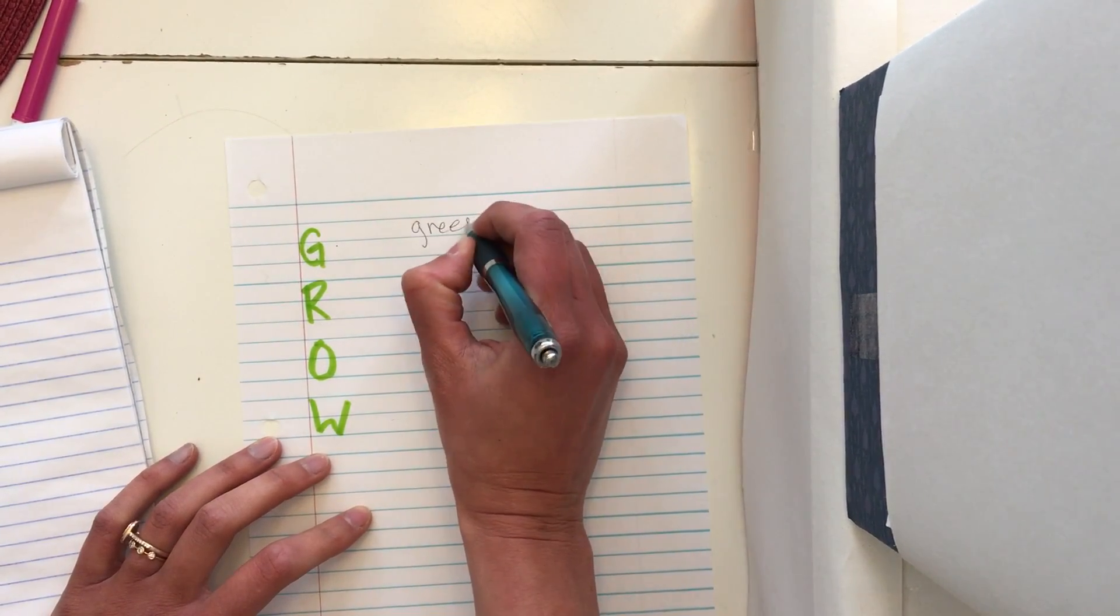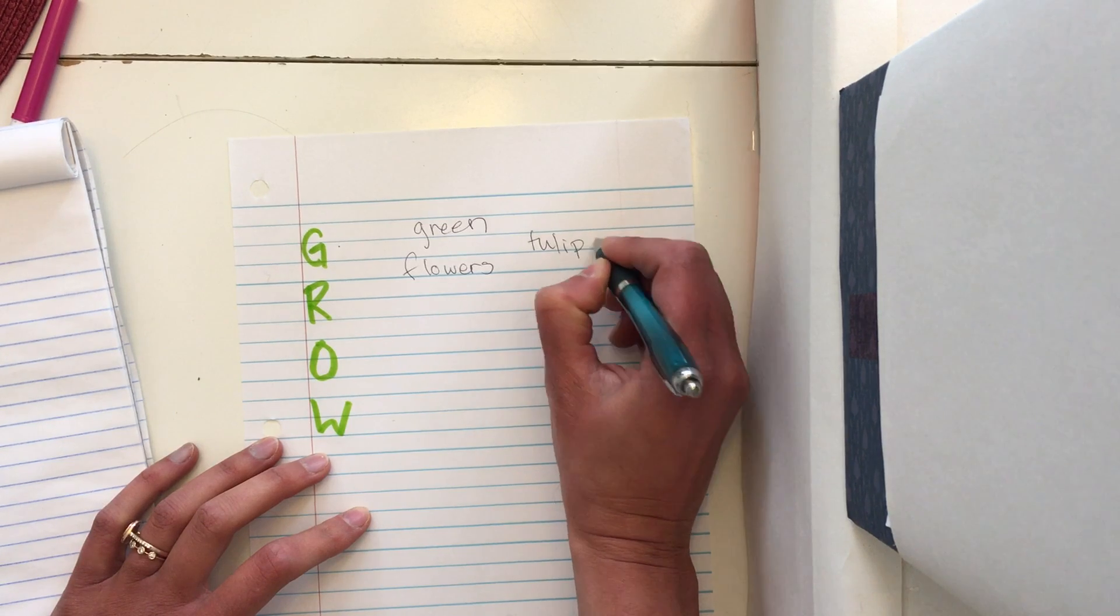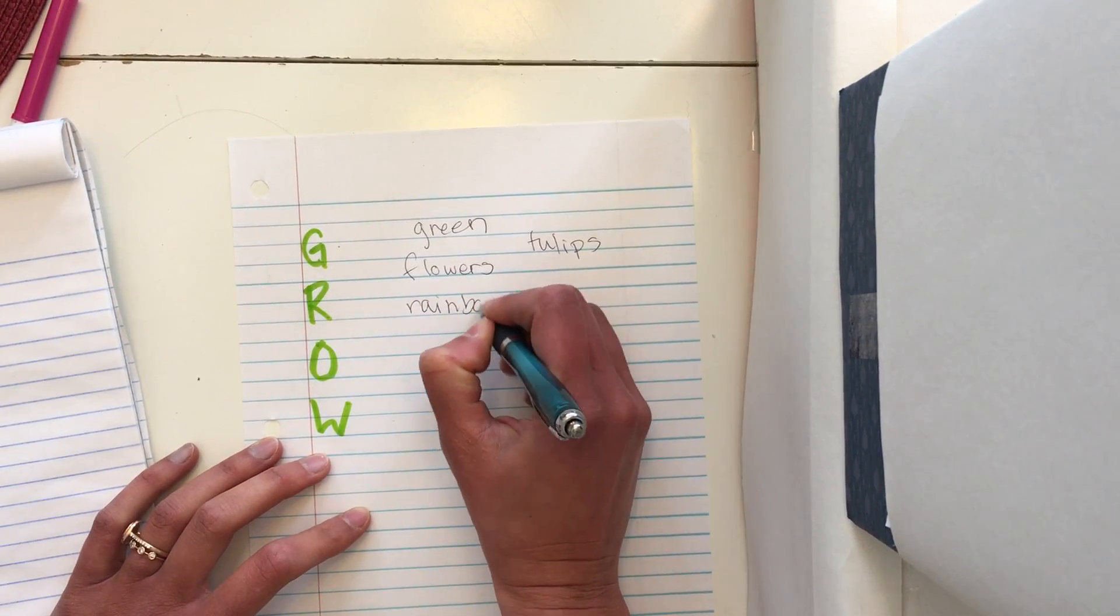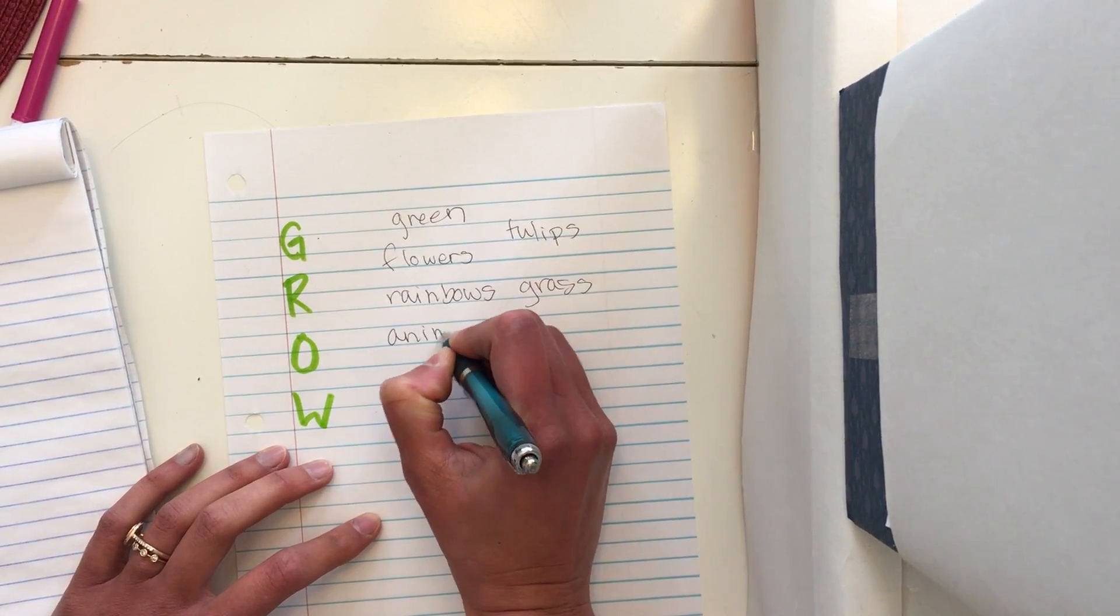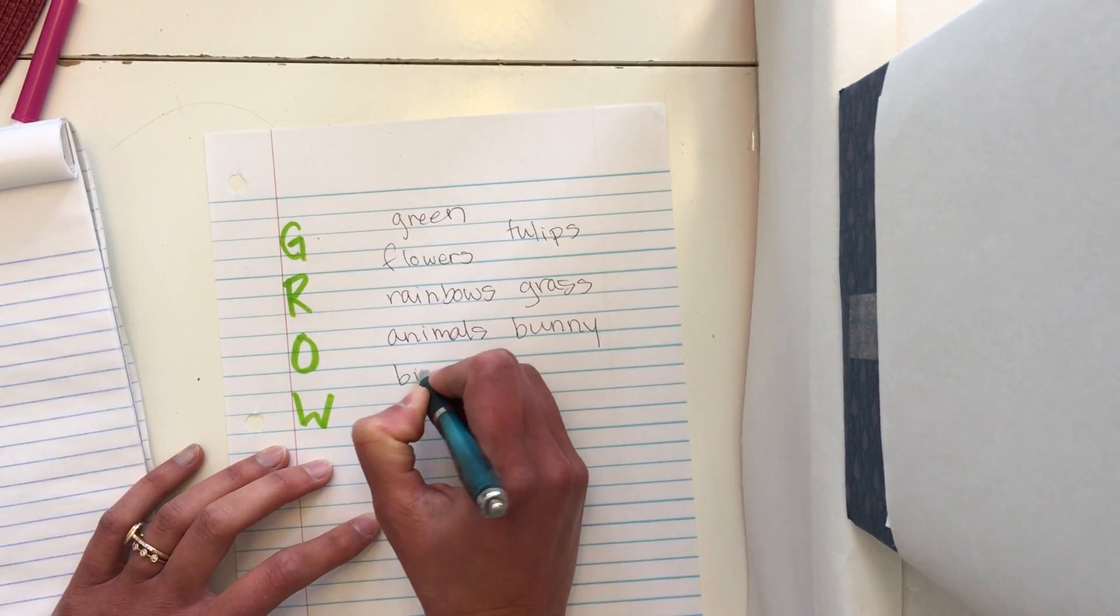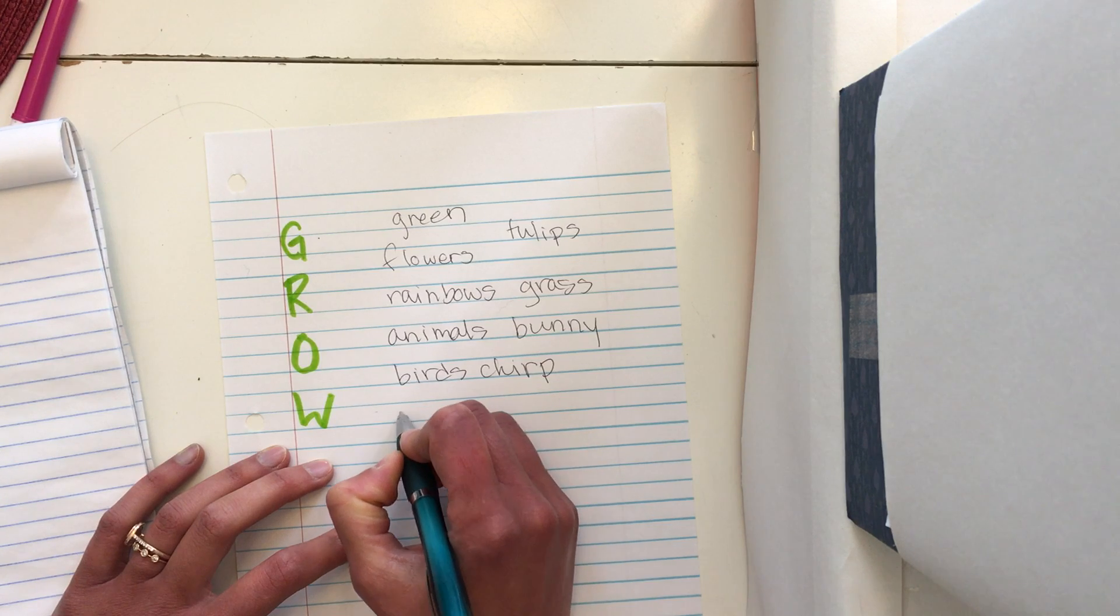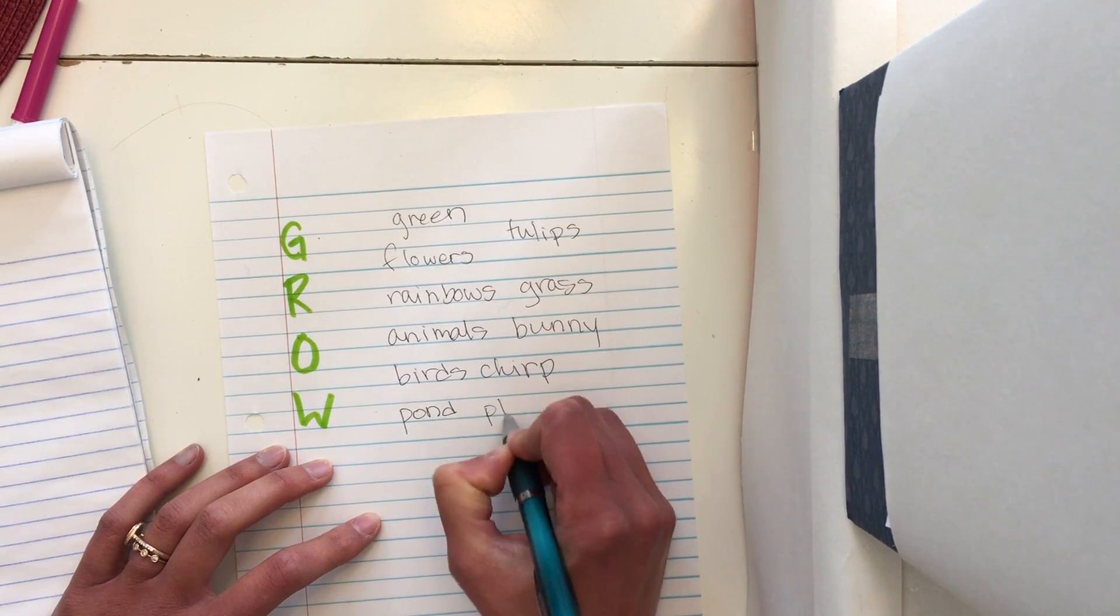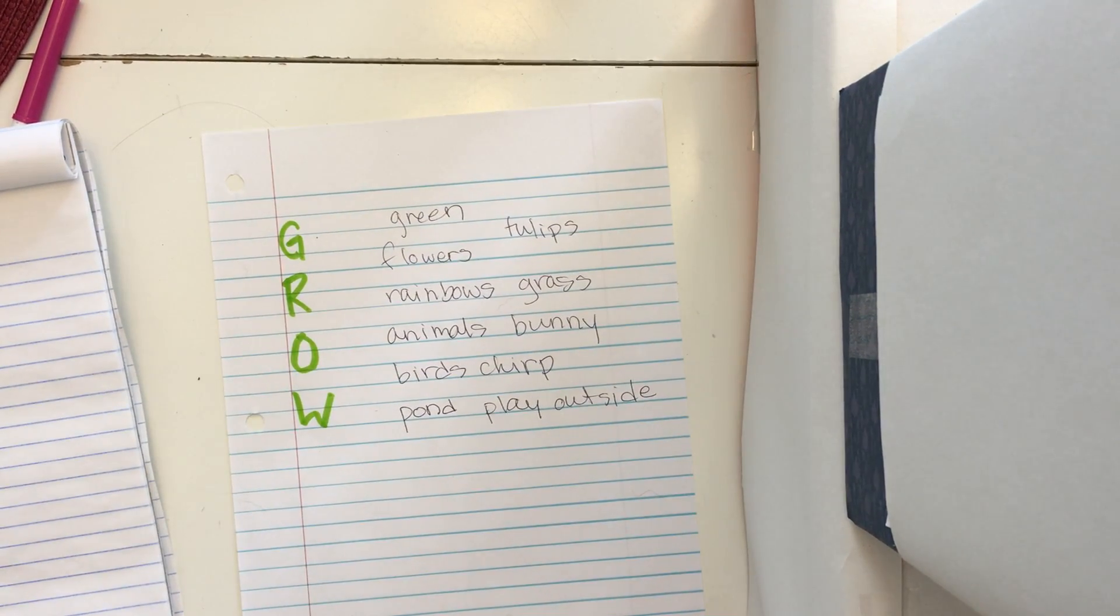I've got green, flowers, tulips, rainbows, grass, animals, bunny, birds, chirp, pond, play outside. All right. So when I thought spring and I thought the word grow, that's what I was thinking. I was thinking about all these things. I just put them on paper.